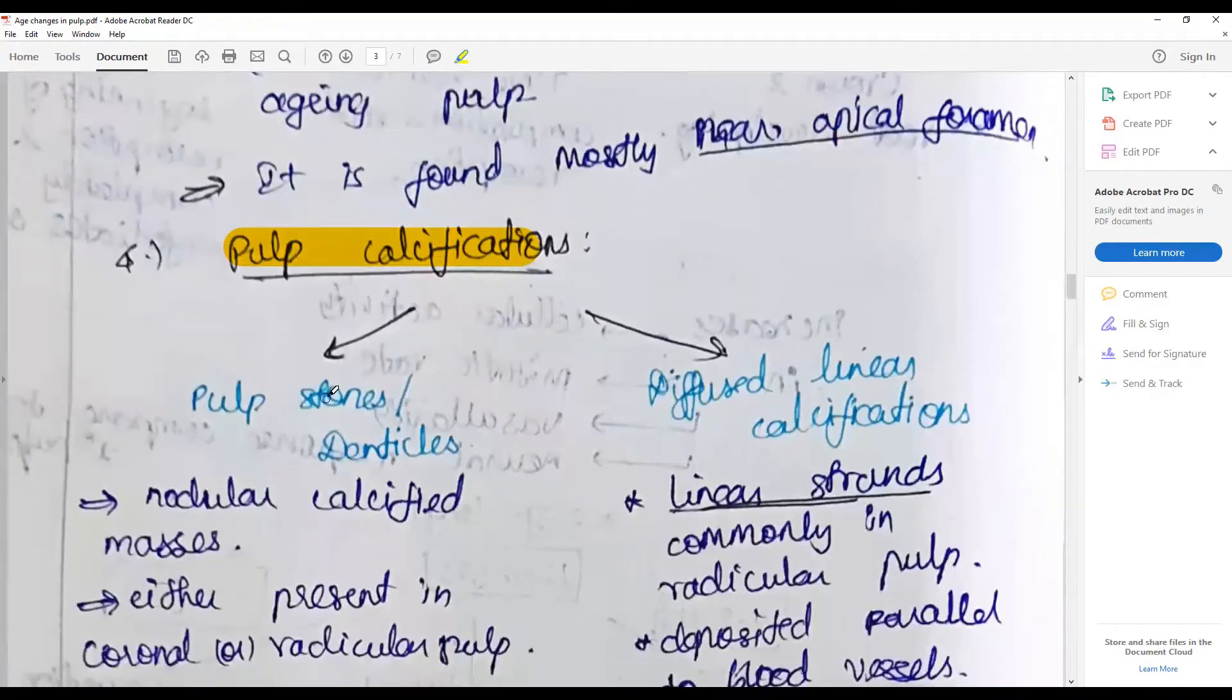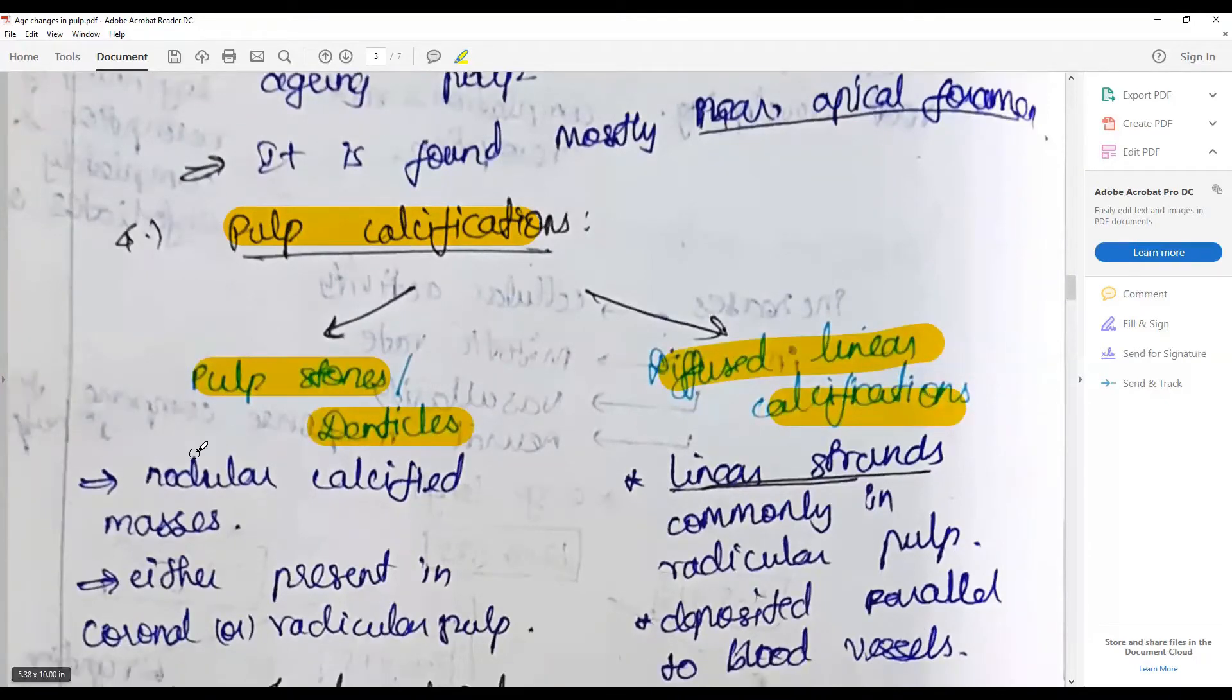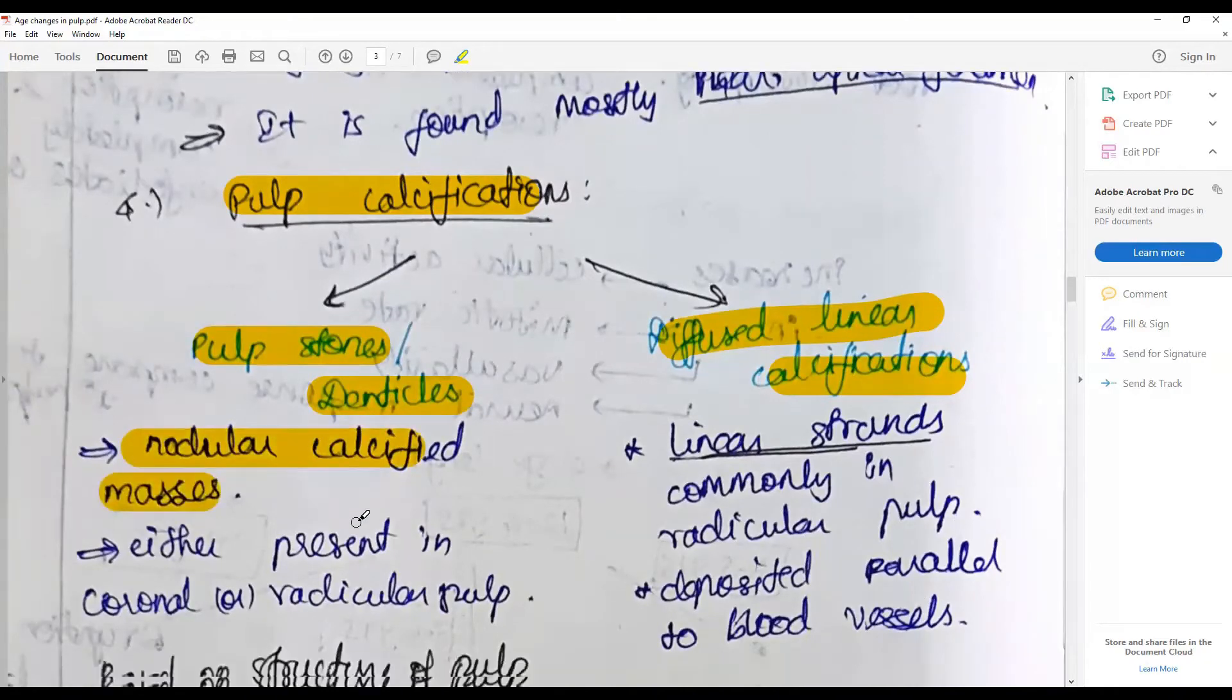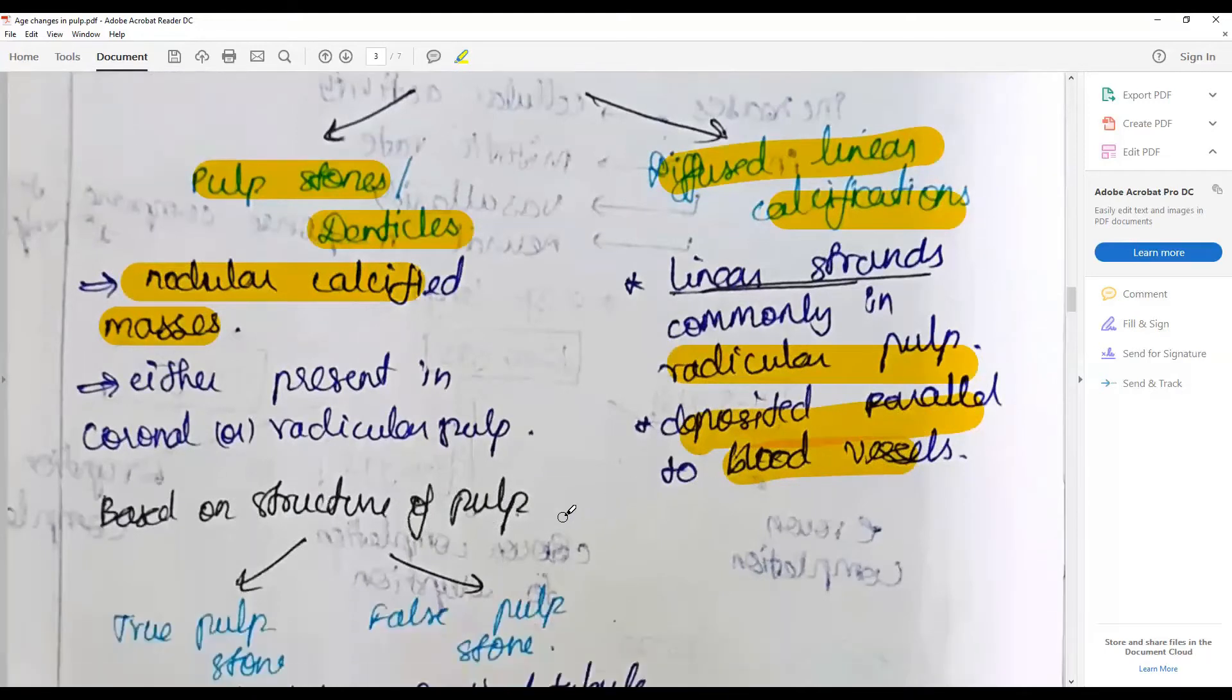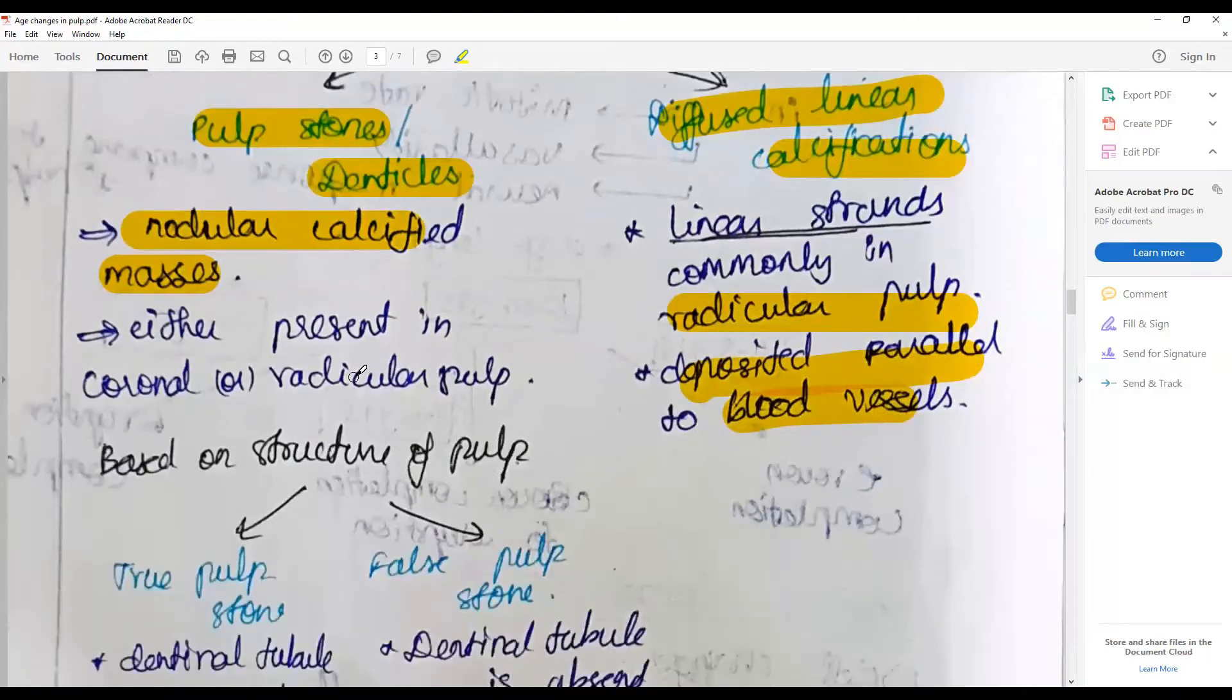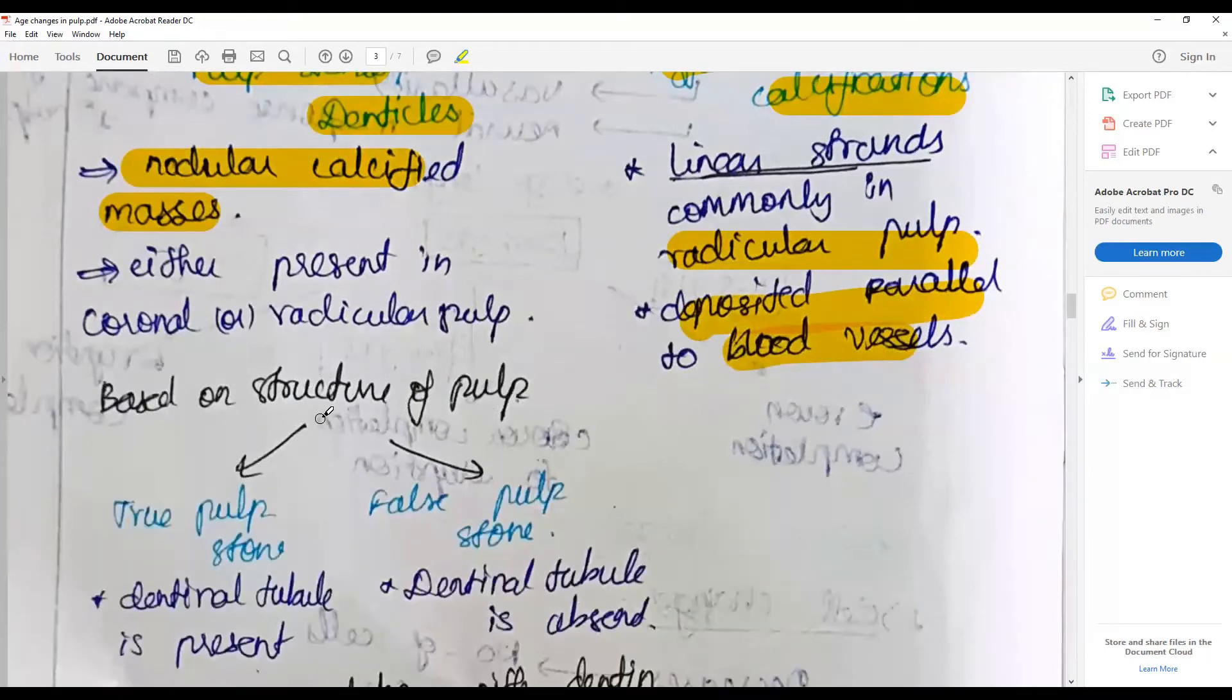Pulp calcifications: it could be pulp stones or denticles or diffused linear calcification. Pulp stones or nodular calcified masses present in either coronal or radicular pulp, whereas linear strands are very common in radicular pulp and deposited near or parallel to the blood vessels.